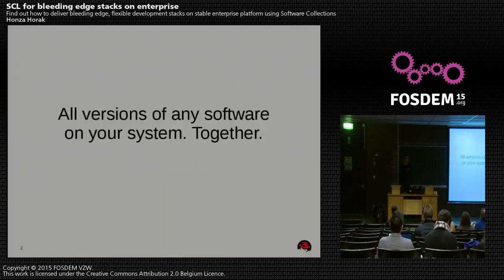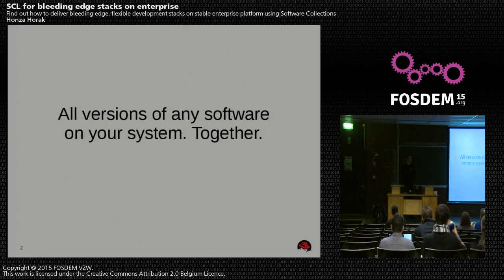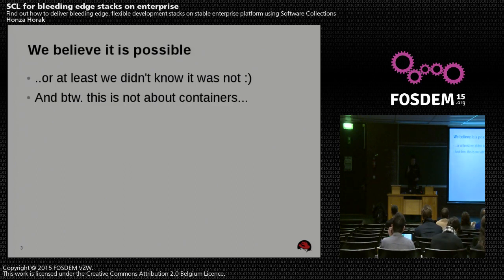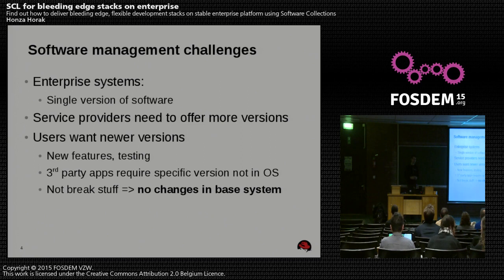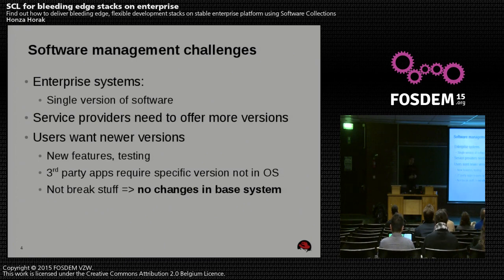Especially for those who are sysadmins or DevOps guys, you probably need to install some specific version on an Enterprise Linux. How do you do it? Well, it's not that simple, because enterprise systems usually ship only one single version of one package or one software application, but users and service providers usually require more. And the problem is that as soon as you install a new version of some application, you can break — and you often do break — all the stuff that depends on it.